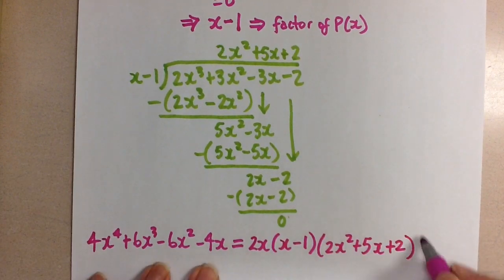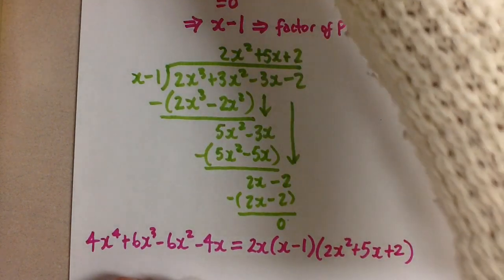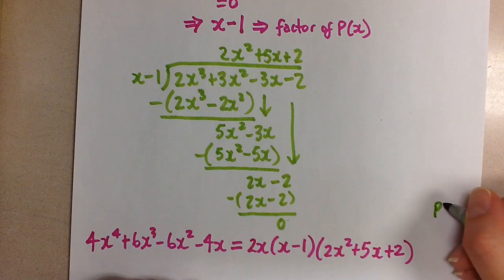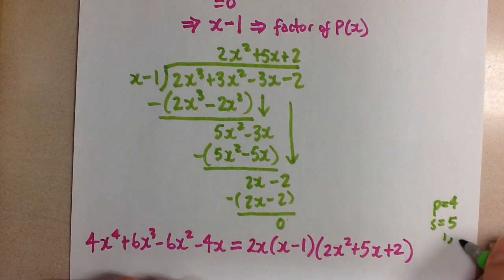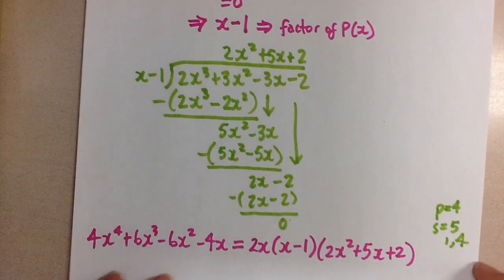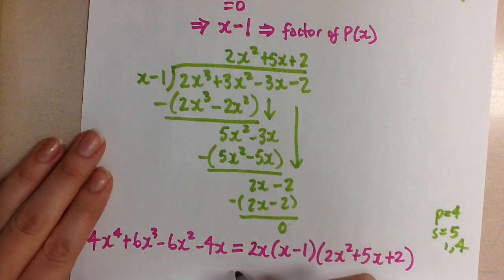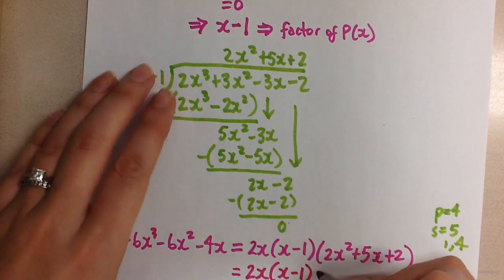But this quadratic here might be able to be factored. So we now have to see if we can factor this quadratic. So we look at this and we use decomposition. Our product here is 4 and the sum is 5. So the two numbers are 1 and 4. And if we use decomposition to factor that, we're going to end up with two factors. We're going to include them now in our final factored form for the 4 degree polynomial.